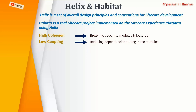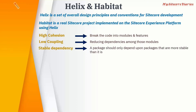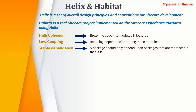The third principle is the stable dependency principle, which states that a package should only depend upon packages that are more stable than itself. So if you have Project A and Project B, and A is referring to B, then A should be more stable than B. That is the stable dependency principle.